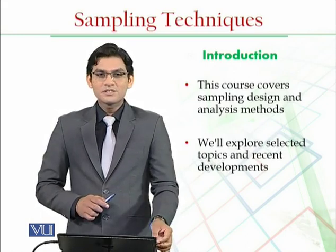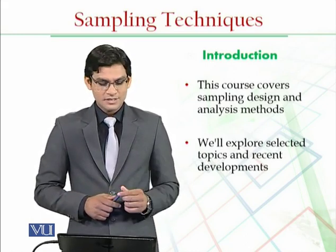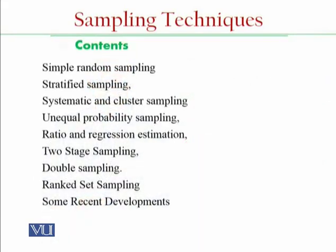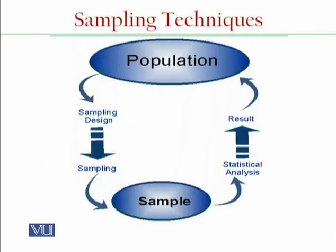We are going to explore the following topics throughout this course: simple random sampling, stratified sampling, systematic and cluster sampling, unequal probability sampling, ratio and regression estimation, two-stage sampling, double sampling, rank set sampling, and finally some recent developments in this field. This pictorial description provides an overall view of the sampling strategy.